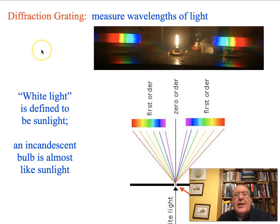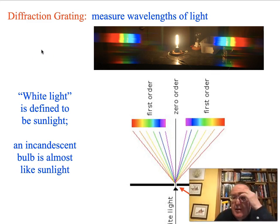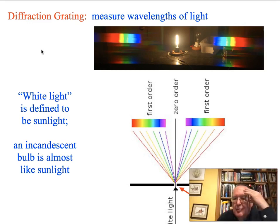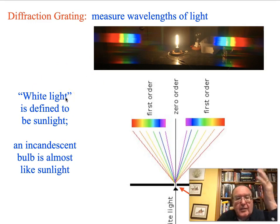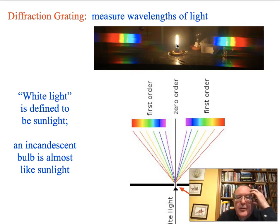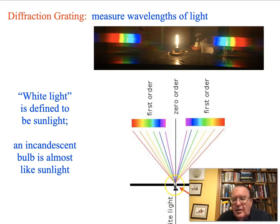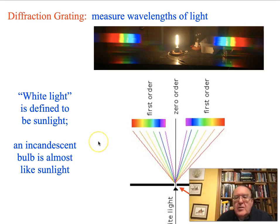We measure these things with a diffraction grating — a beautiful instrument. In the lab, we have small plastic diffraction gratings that cost about a penny apiece. White light — defined by sunlight — can be analyzed this way. Here's an incandescent light bulb shown in a photograph. If you look at it through a diffraction grating, you see its spectrum. White light comes in, passes through the grating, and you see a rainbow — a spectrum — on either side, with a white zero-order stripe in the middle. By measuring the angle of the diffracted light, you can directly measure the wavelength of the light.